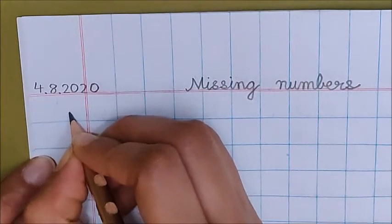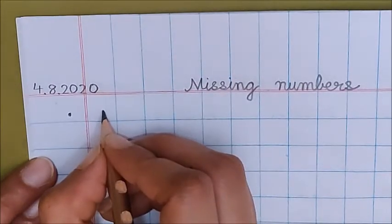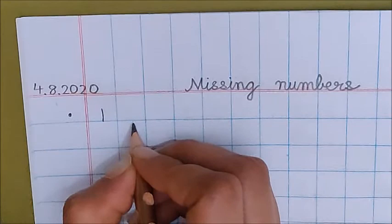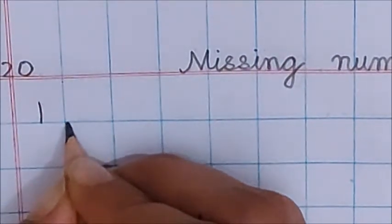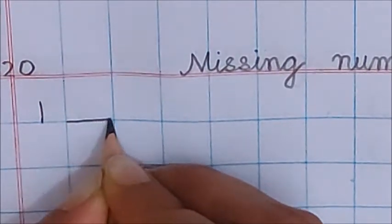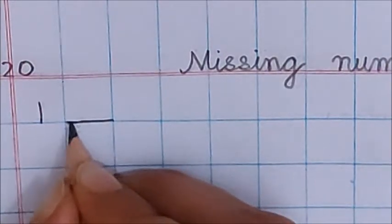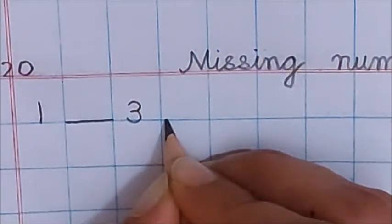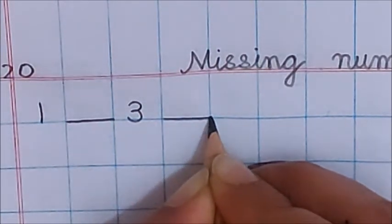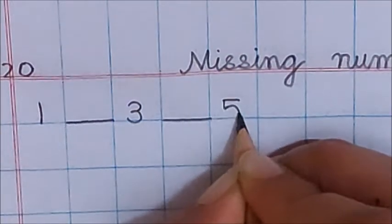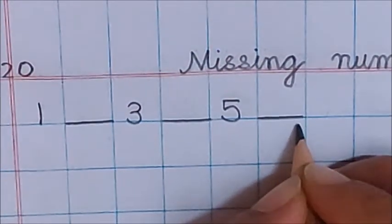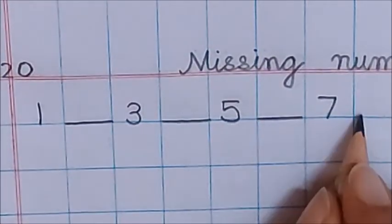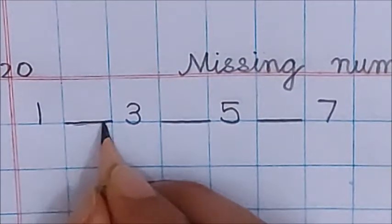Below the date put one dot. Now in the next box write number one. In the next box, on the blue line, make a dash. Now in the next box write down three. Again in the next box on the blue line make a dash. Now in the next box write down five. Again make a dash. Now in the next box write number seven. See children, all my numbers are touching the blue line, and even my dashes are on the blue line.